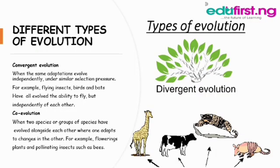There are three types of evolution. The first is convergent evolution, when the same adaptation evolves independently under similar selection pressure — for example, flying insects, birds, and bats all evolved the ability to fly independently of each other. The second is co-evolution, when two species or groups of species have evolved alongside each other, where one adapts to changes in the other — for example, flowering plants and pollinating insects such as bees.